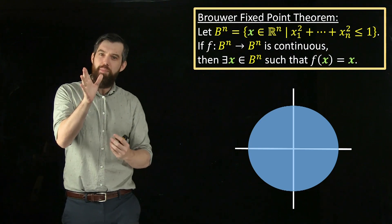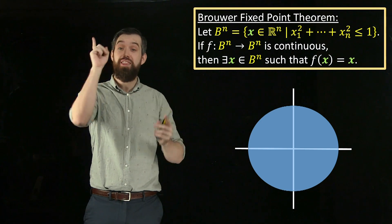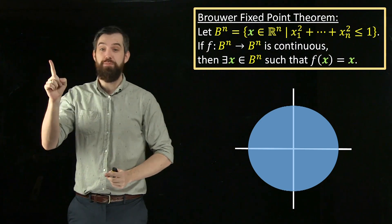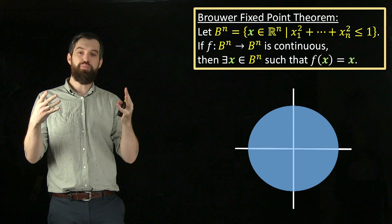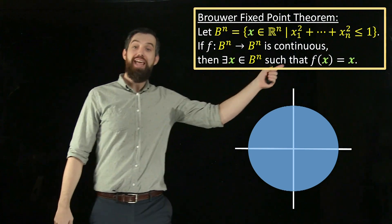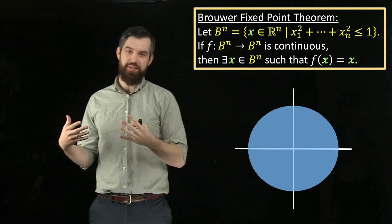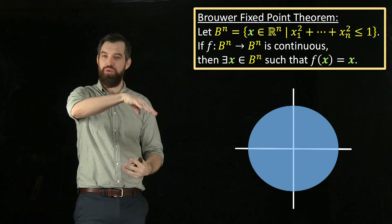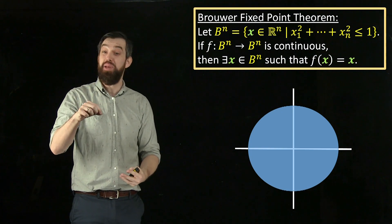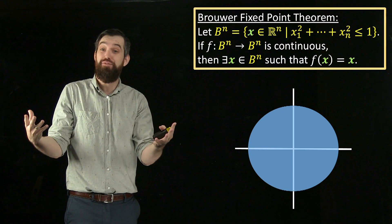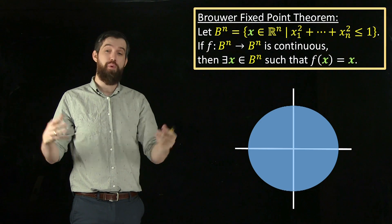The claim of Brouwer's fixed-point theorem is that there is a fixed point — there is one x that has the property that f(x) is equal to x. So in the case of rotation, it's that point right in the middle, but for some other continuous function, it might be some other point.